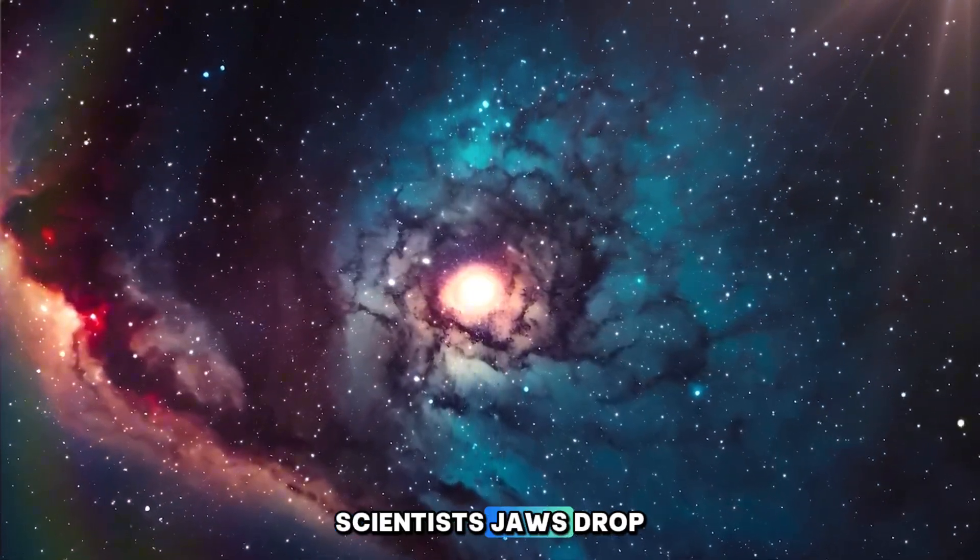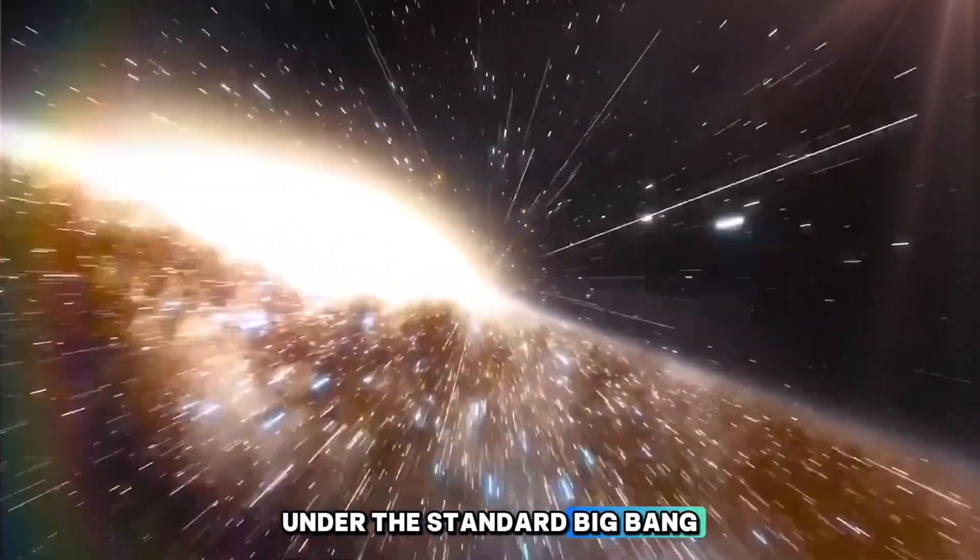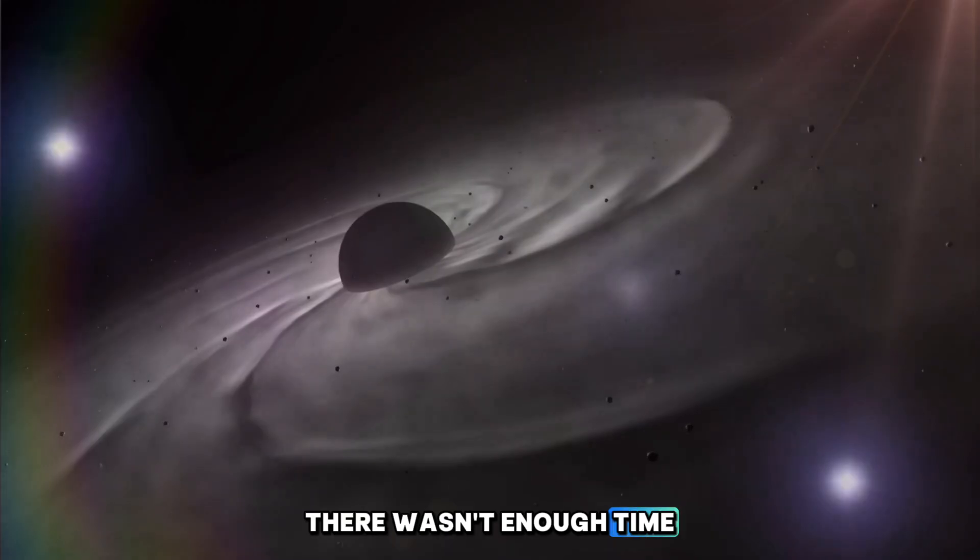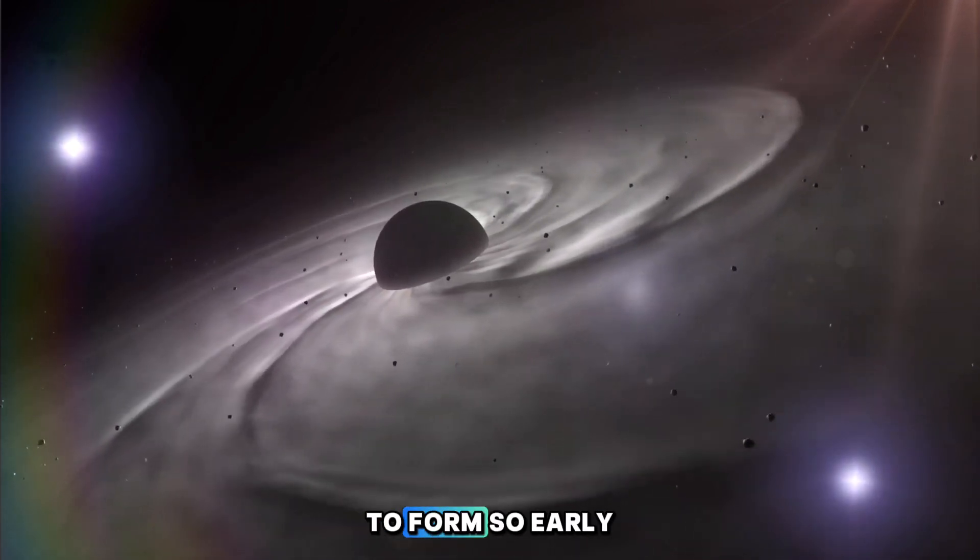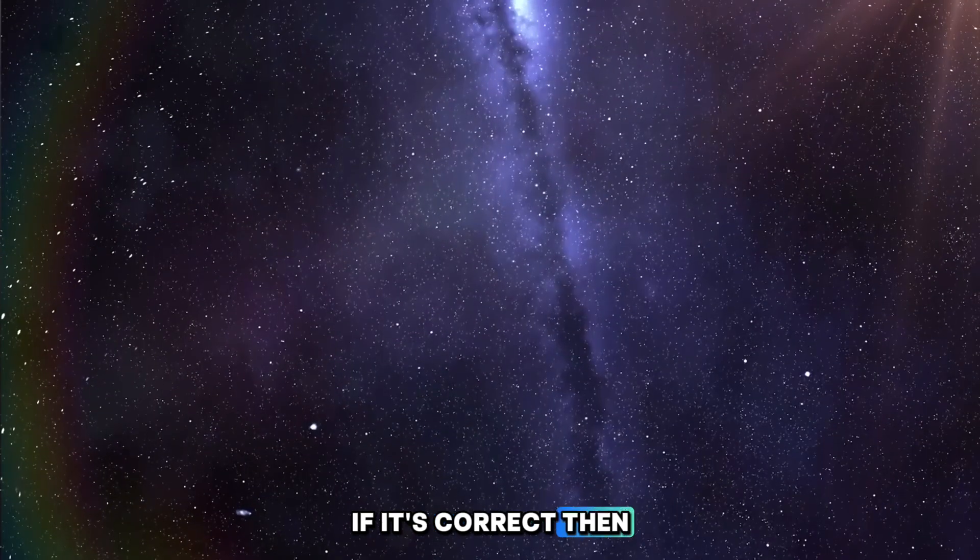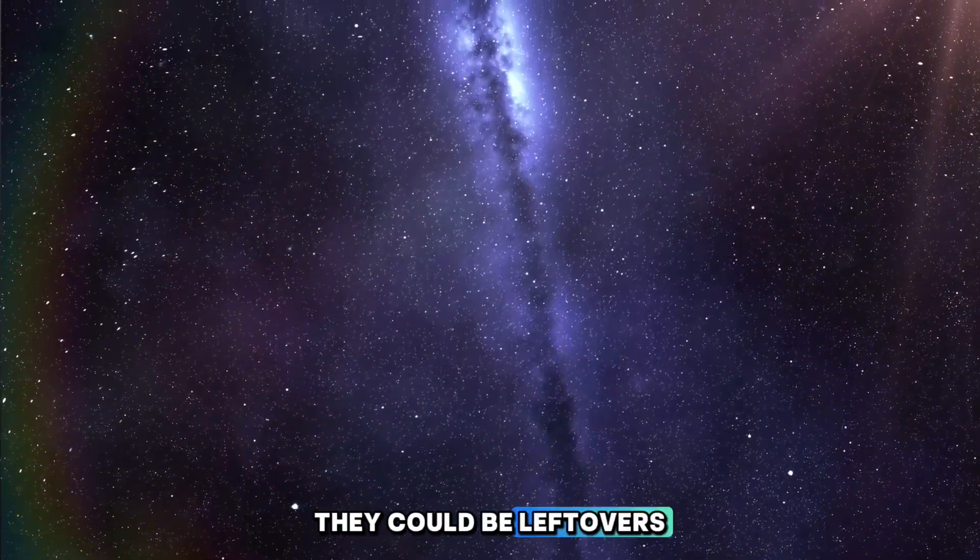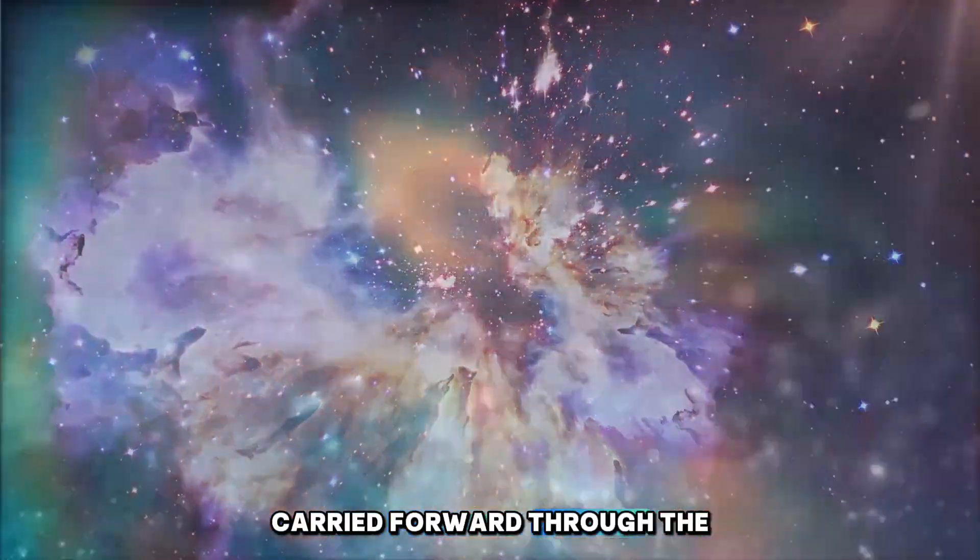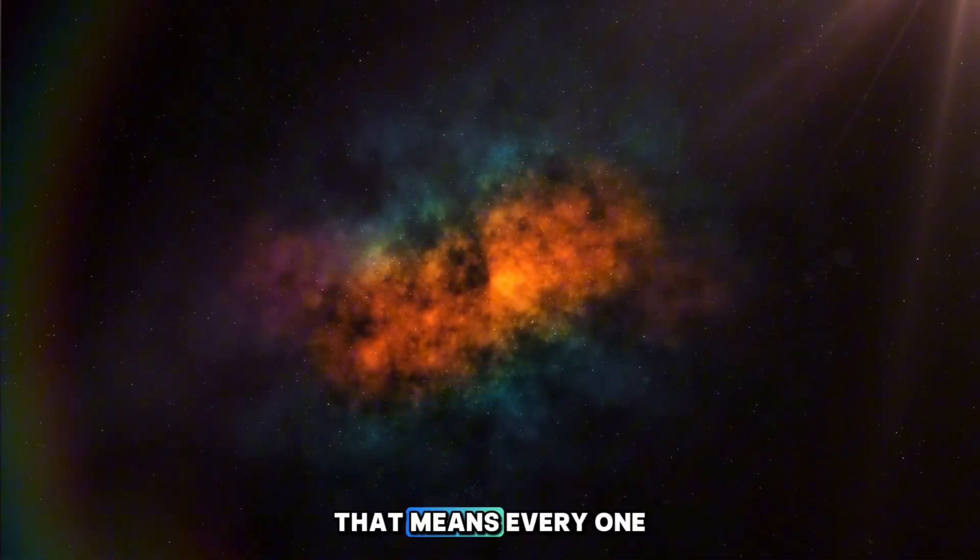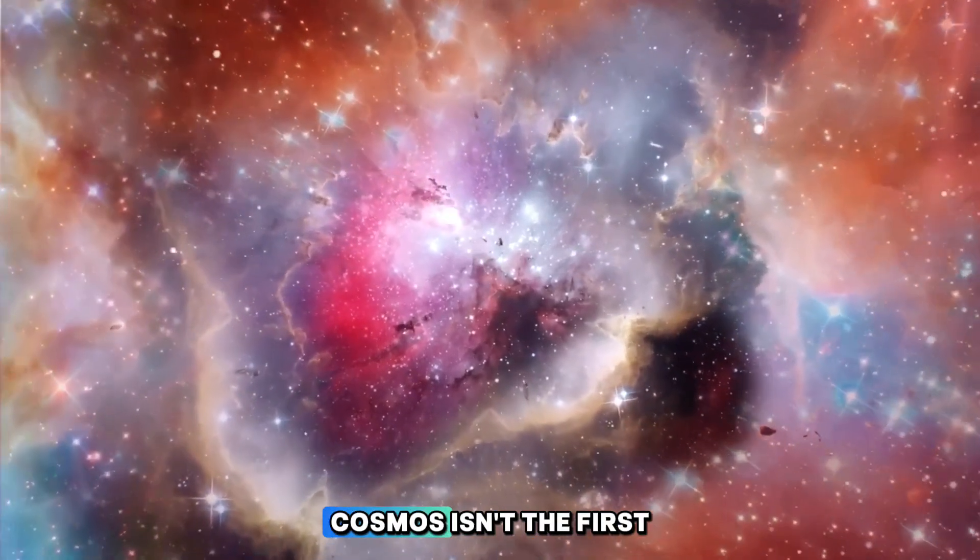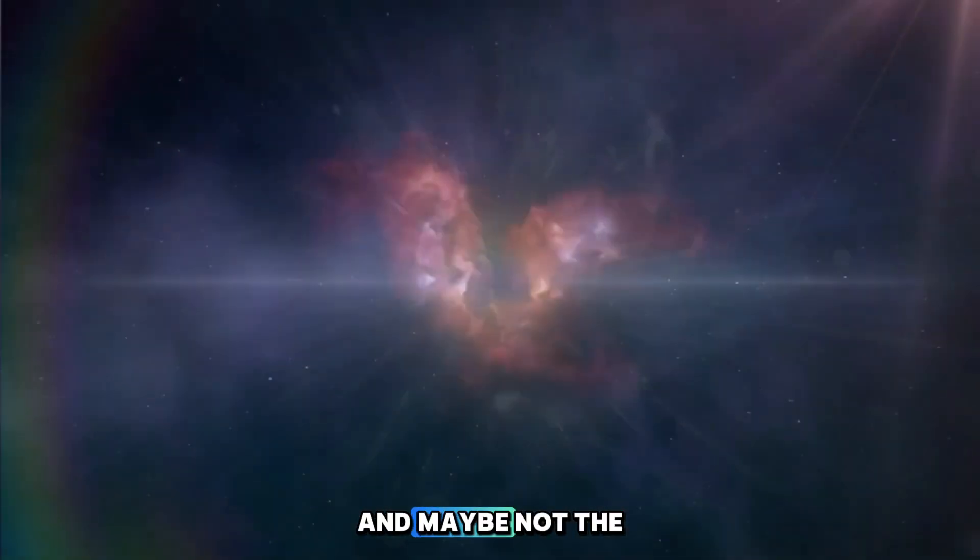And here's what's making scientists' jaws drop. Under the standard Big Bang model, these black holes simply shouldn't exist. There wasn't enough time for anything that dense to form so early. But the cyclic universe theory changes everything. If it's correct, then these black holes might not be new at all. They could be leftovers from the memory of a previous universe, carried forward through the great cosmic bounce into ours. That means every one of these primordial black holes James Webb spots could be an echo. A clue that our cosmos isn't the first, and maybe not the last.